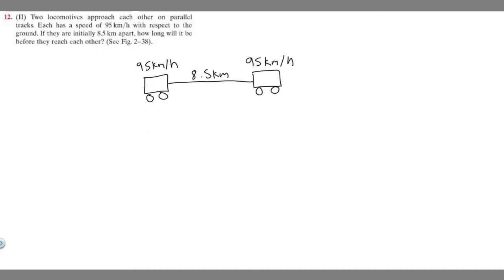In this problem, we're told two locomotives approach each other on parallel tracks. Each has a speed of 95 kilometers per hour with respect to the ground. If they are initially 8.5 kilometers apart, how long will it be before they reach each other?